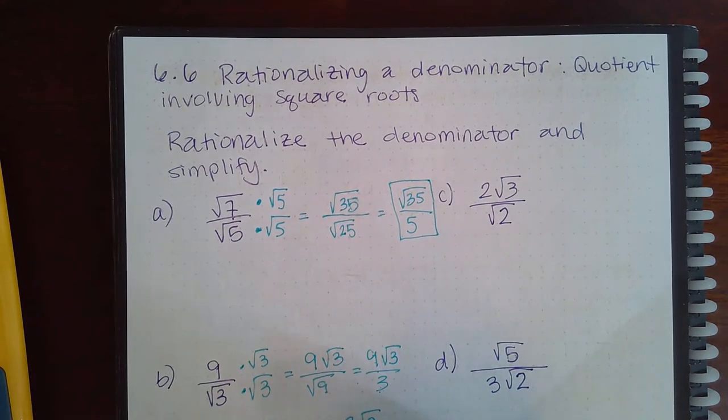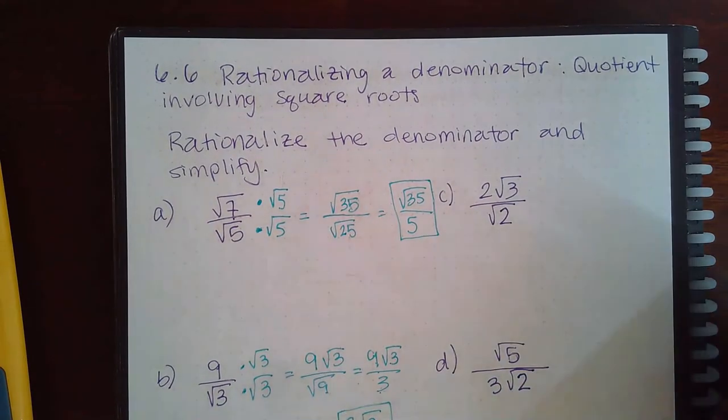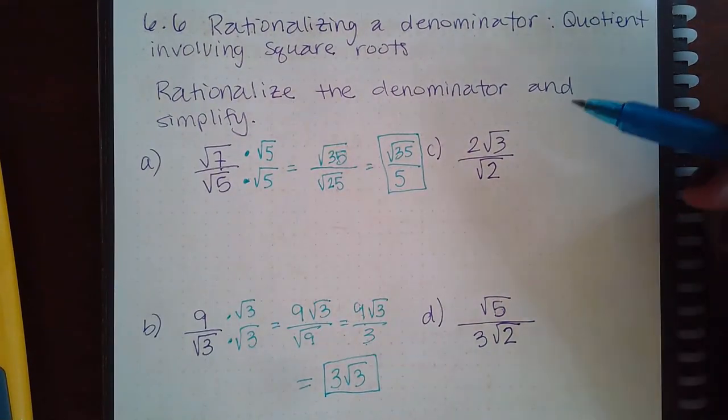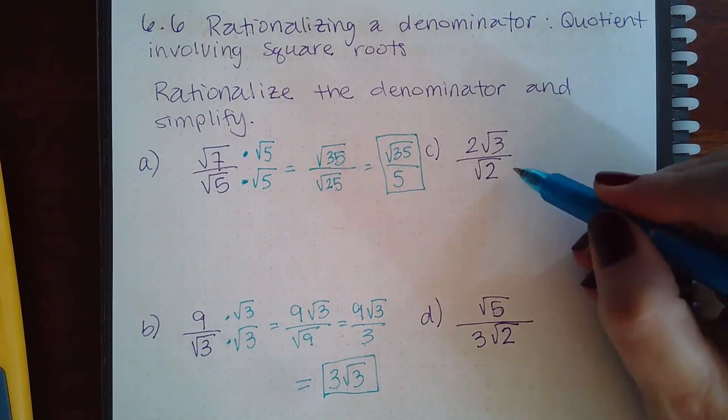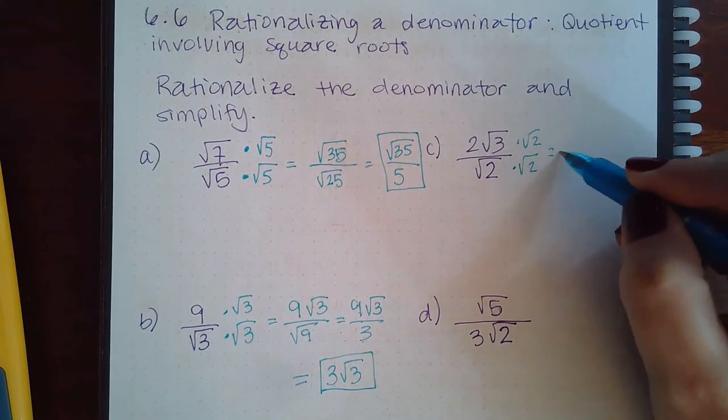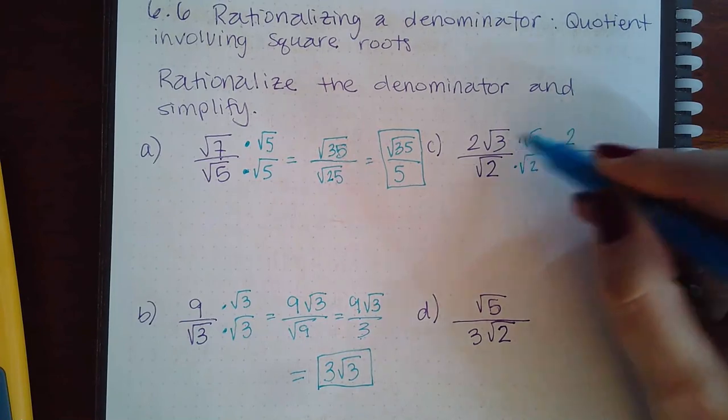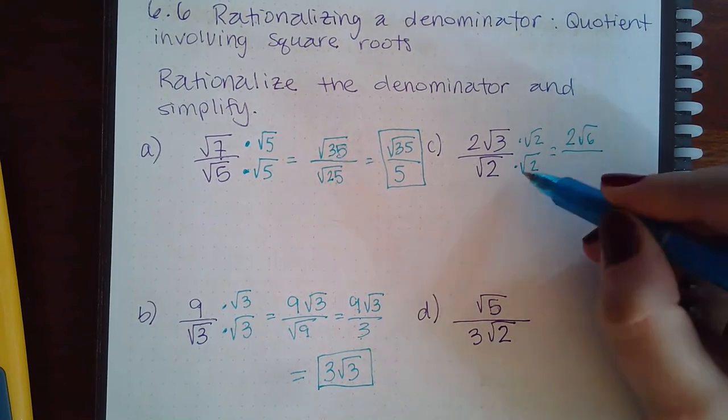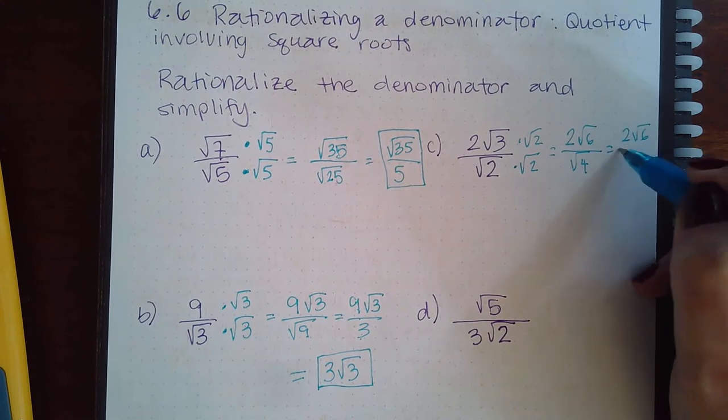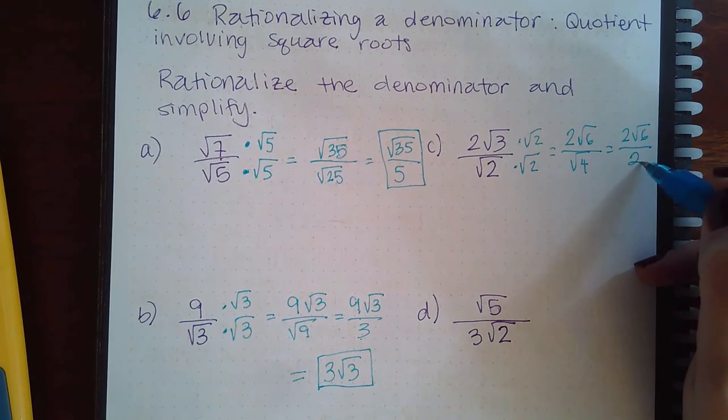Over here for part c, it's the same thing. I needed another 2, so square root of 2 times square root of 2, we end up with the big 2 on the outside, and then square root of 6 here. We end up with the square root of 4. You cannot simplify the square root of 6, but you can simplify the square root of 4, and then these two will both reduce, leaving you with just the square root of 6.